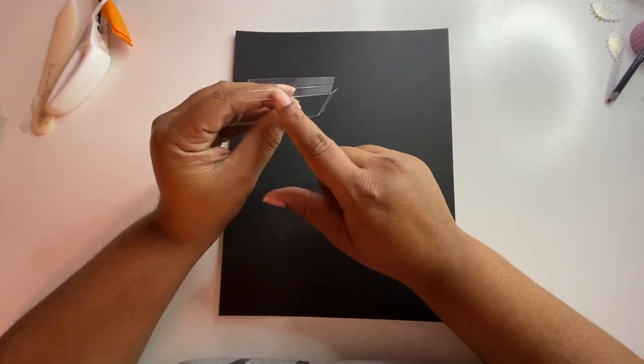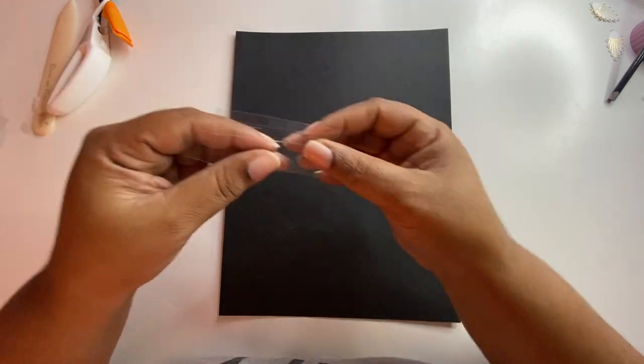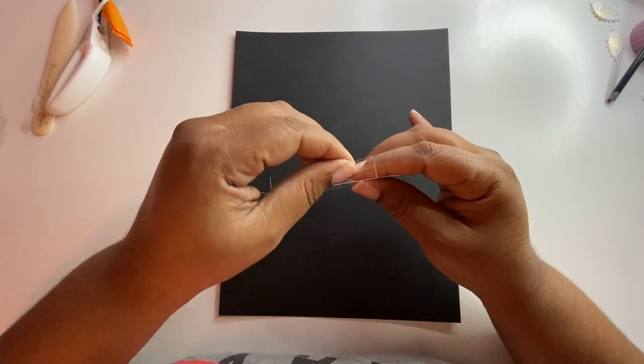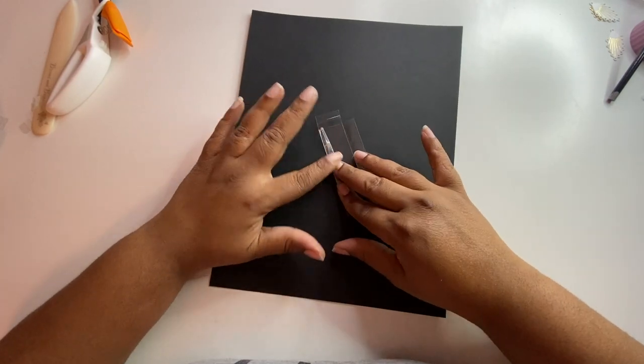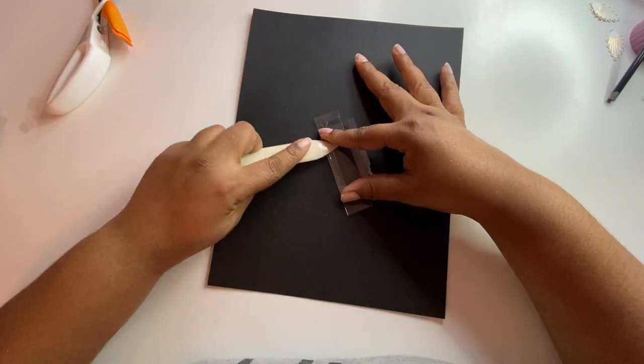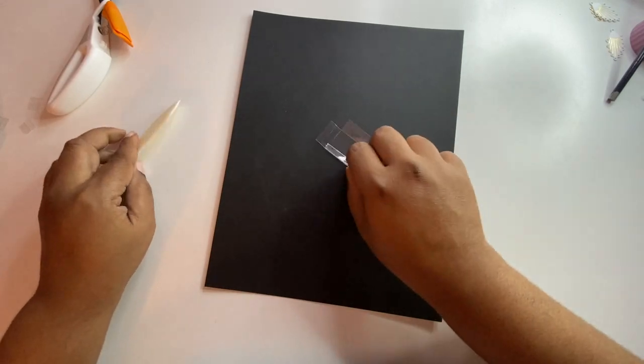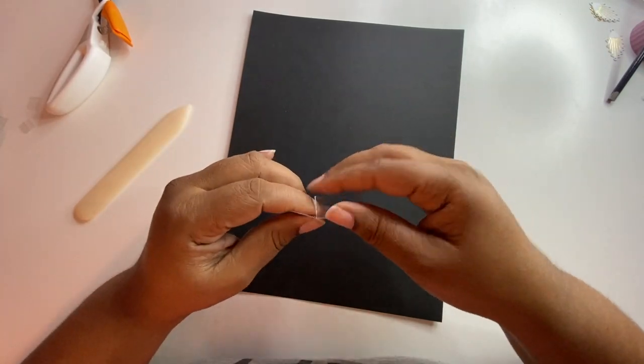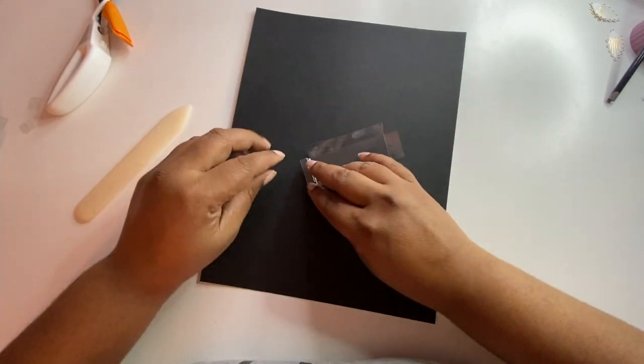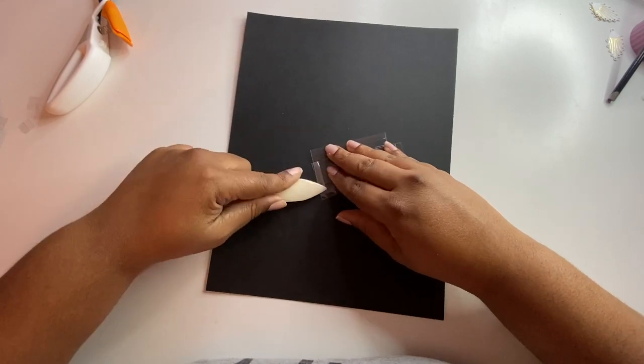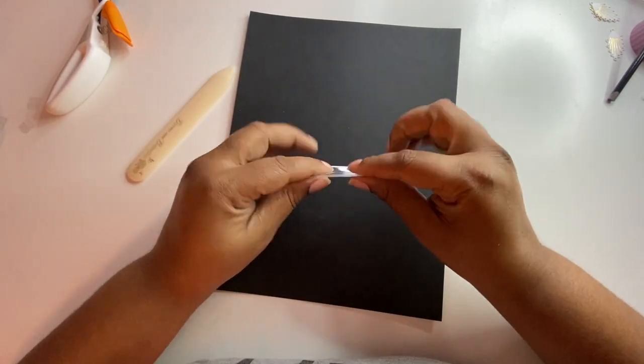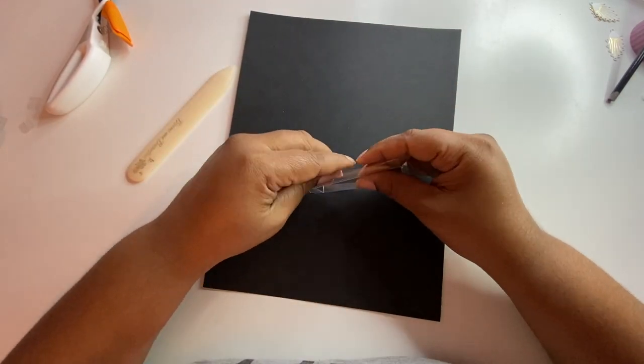Then I'm going to take the quarter inch score lines and I'm going to do a valley fold. So you're going to have like a mountain and a valley fold because the way that I do my domes is I like the domes to be on the inside. I don't want the outside piece showing.